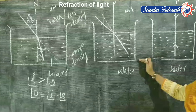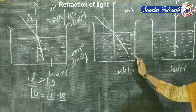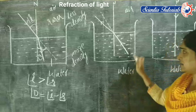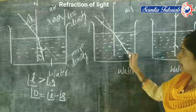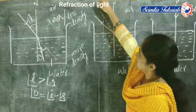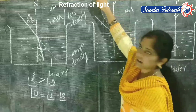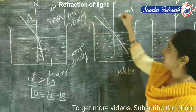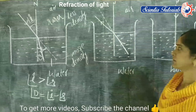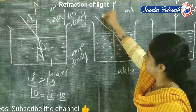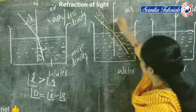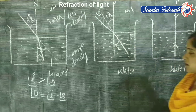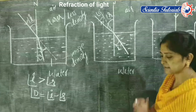Now let's talk about the second condition — when light is traveling from water to air. Here water is the denser medium and air is the rarer medium. When light travels from a denser medium to a rarer medium, it deviates from its path. The light ray would travel straight but instead it deviates and travels away from the normal.